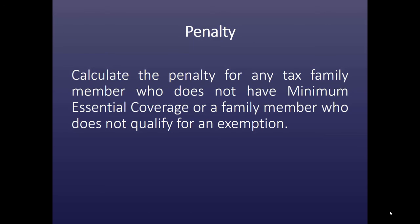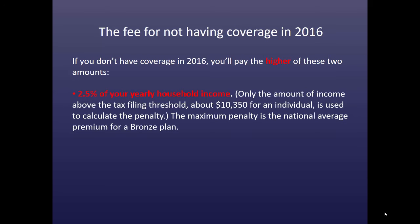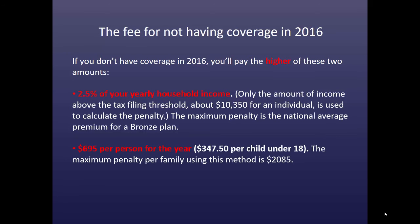You would calculate the penalty for any tax family member who does not have minimum essential coverage or a family member who doesn't qualify for one of the exemptions. The fee for not having coverage in 2016 — you will pay the higher of these two amounts: 2.5% of your yearly household income (only the amount of income above the tax filing threshold, which is about $10,350 for an individual, is used to calculate this penalty), or $695 per person for the year, $347.50 per child under 18. The maximum penalty per family using this method is $2,085.